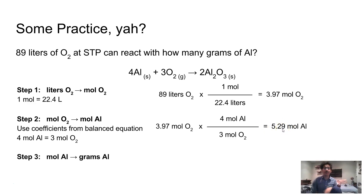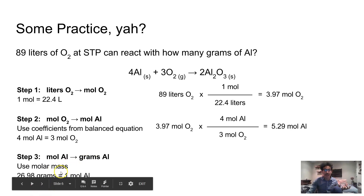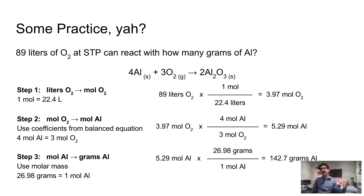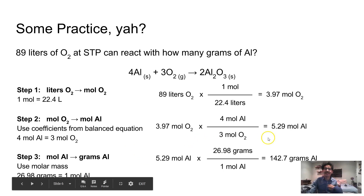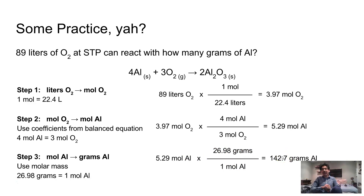Step three, I'm going to change my moles of aluminum to grams of aluminum using the molar mass of aluminum. I'll put the grams up top because those are the new units, and my moles down below because that's what I'm getting rid of. I'll take the 5.29 moles of aluminum from the last step, multiply it by my molar mass fraction, and that gives me the total grams of aluminum.